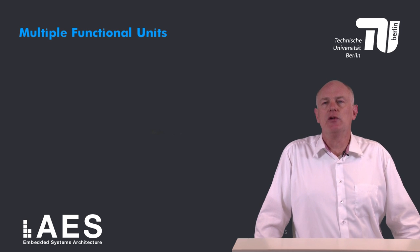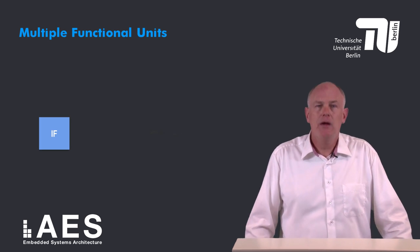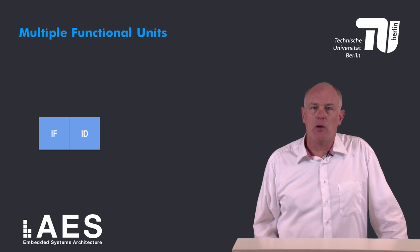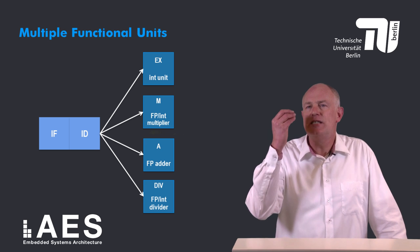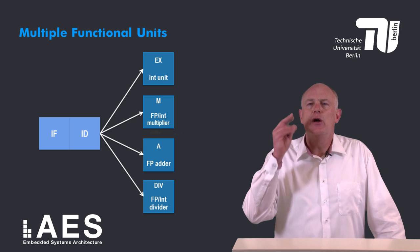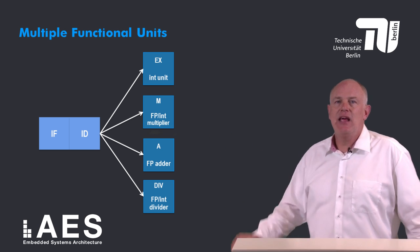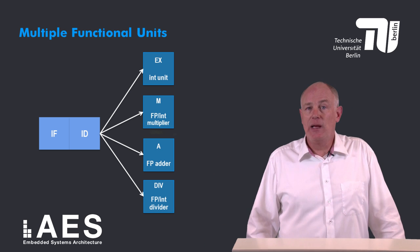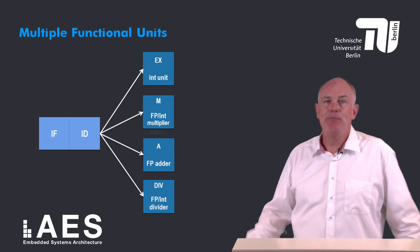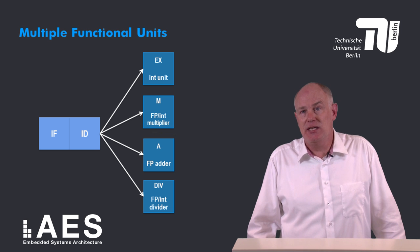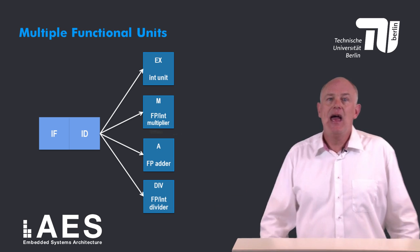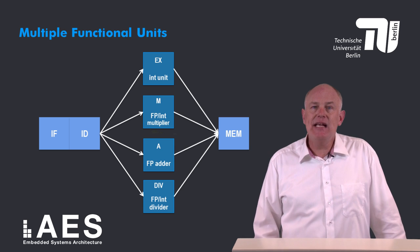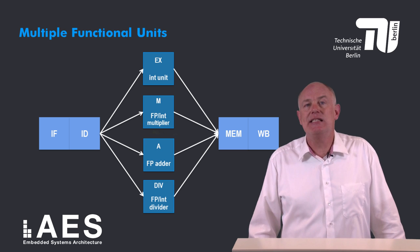First, let's see how we can support multiple functional units. We have the instruction fetch stage as before, then the decode stage as in the canonical pipeline. Thereafter we don't have a single integer unit but four separate functional units: the main unit that executes loads, stores, integer operations, and branches (x); a floating point integer multiplier (m); a floating point adder for additions, subtractions, and conversions (a); and a floating point integer divider (div). Then we have the mem stage and finally the writeback stage as in the canonical pipeline.